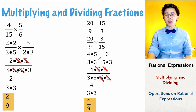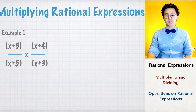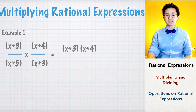Now we're going to apply this technique to rational expressions, using the same strategy for more complex algebraic expressions. For example, number 1, we're going to multiply x plus 3 all over x plus 5 by x plus 4 all over x plus 3. For multiplication, we're not going to FOIL the binomials — instead, we'll put them all together and see which factors we can cancel.